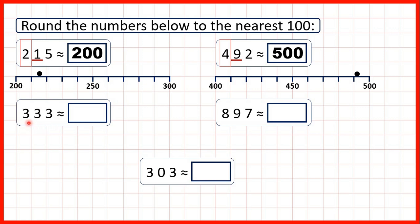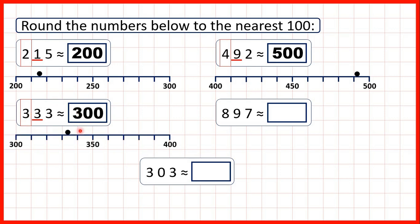Now we have 333. We circle our hundreds digit and look to the right. It's 4 or less — it's a 3 — so we're rounding down, which means the 3 in our hundreds stays the same, giving us 300. On a number line, 333 is closer to 300 than it is to 400, so that's why we round down.